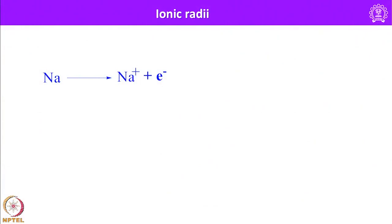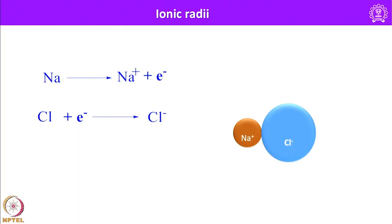For example, sodium when you remove an electron generates a cation, and similarly chlorine on addition of an electron generates an anion. I have shown in this cartoon here Na⁺ interacting with the much larger chloride ion to form NaCl. This internuclear distance gives you the total sum of the ionic radii of the sodium ion as well as the chloride ion.